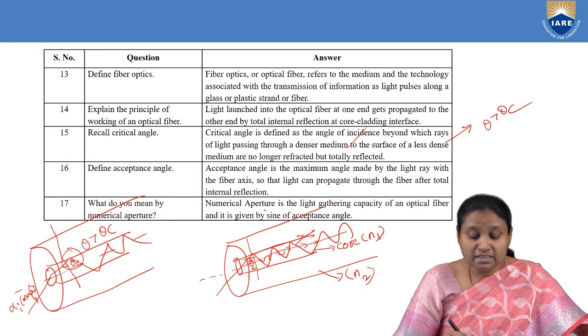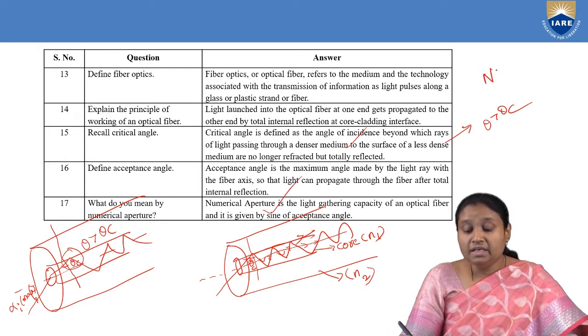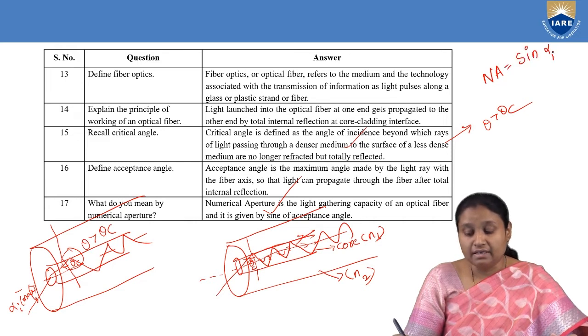What is numerical aperture? It is called the light-gathering capacity, and numerically it is taken as the sine of the acceptance angle.